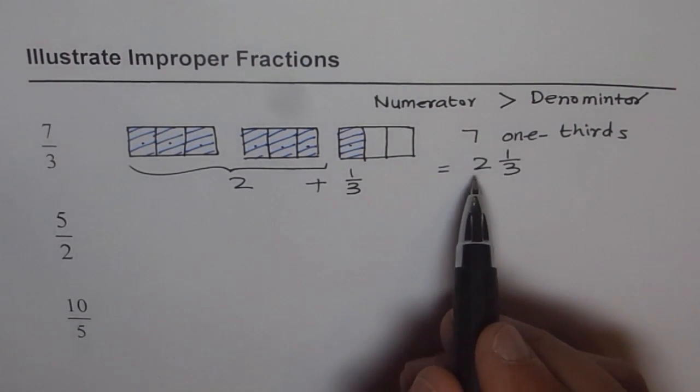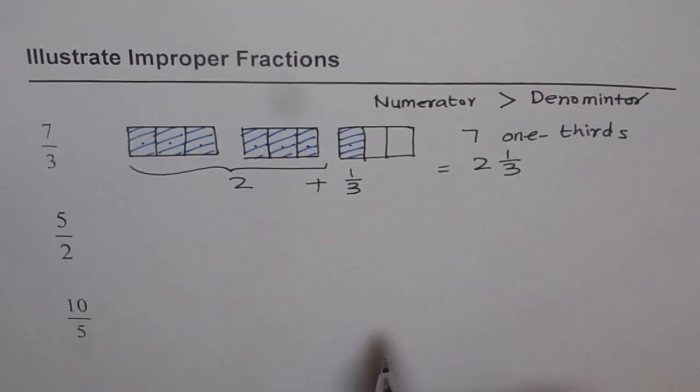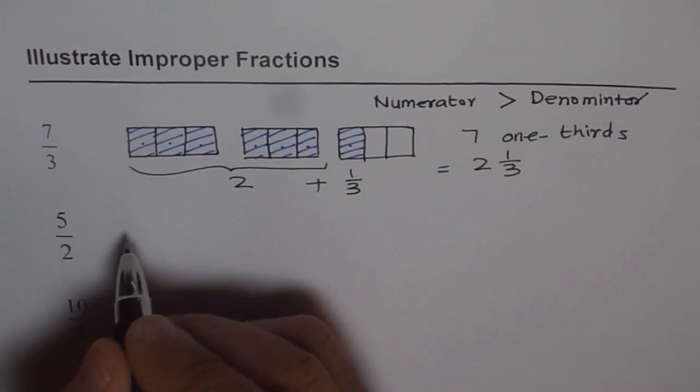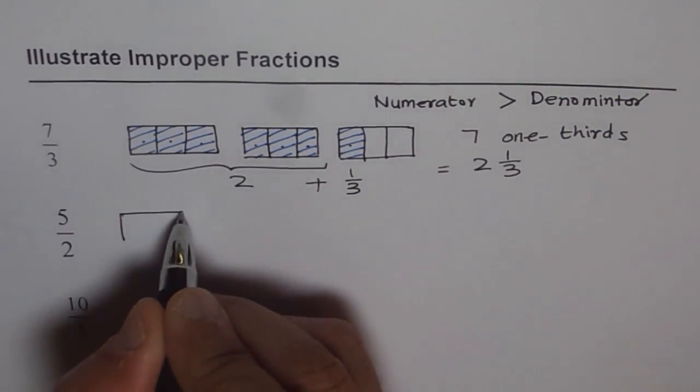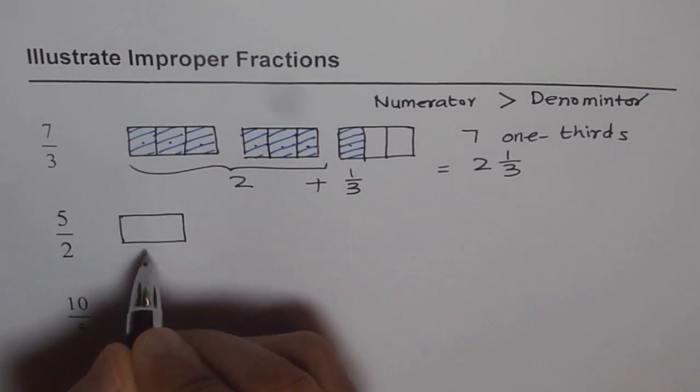That one is a mixed. It has got a whole number and a fraction, 2 one-thirds like you have seen here. Let's try to make what 5 over 2 is. Can you help me in that? If I make a rectangle, then in how many parts should I divide it?